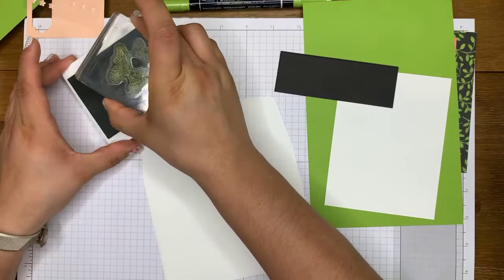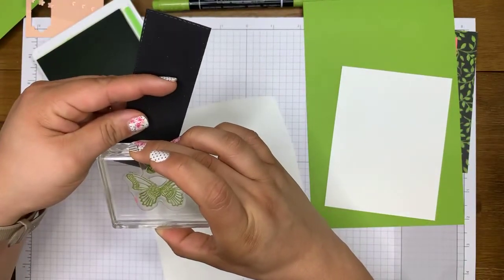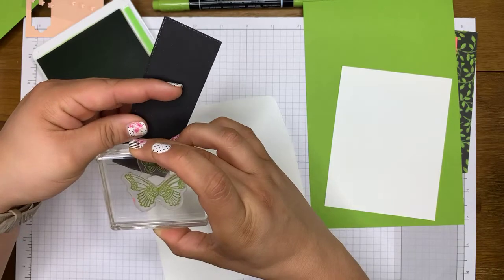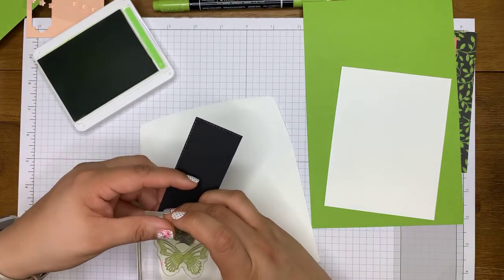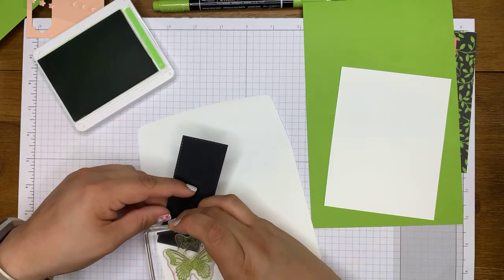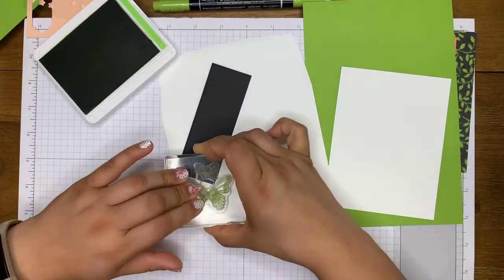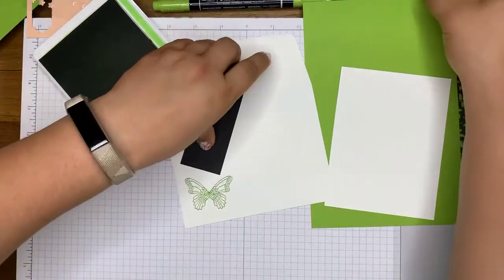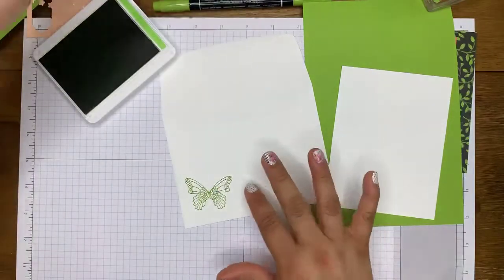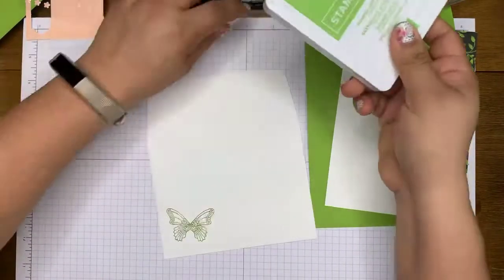So I'm just going to grab a piece of scrap paper and I'll show you why in a second. Okay. So I'm just going to ink up this butterfly and then I'm going to take my scrap paper and I'm going to cover this top butterfly because I don't want that butterfly. You could use a post-it for this also. I hope you guys can see that. I hope I'm not off camera. Okay. So I'm just stamping that there this way with that scrap piece of paper. I just get the one butterfly because that's all I wanted.